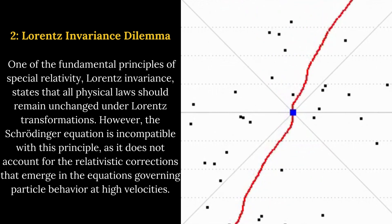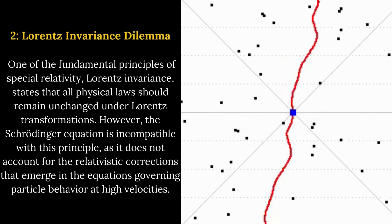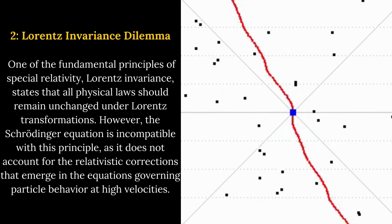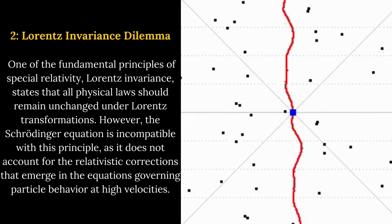However, the Schrodinger equation is incompatible with this principle, as it does not account for the relativistic corrections that emerge in the equations governing particle behavior at high velocities.